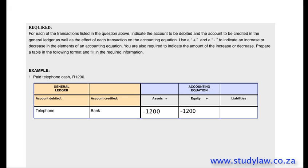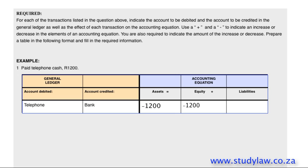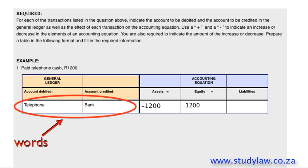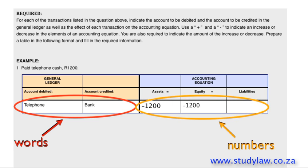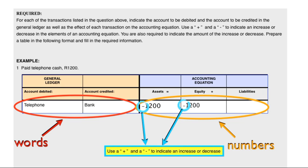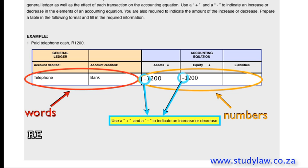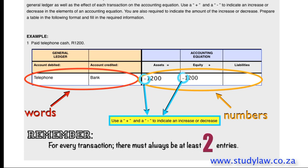We can see that we have five columns, all of which need to be filled in: Account Debited, Account Credited, Assets, Equity, and Liabilities. Underneath Account Debited and Account Credited, you will only write words. Underneath Assets, Equity, and Liabilities, you will only write numbers. Remember, in front of each number you need to use a plus or minus to indicate an increase or decrease. For every transaction, there must always be at least two entries.